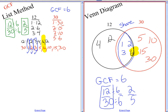12 thirtieths is equivalent to 2 fifths, but 2 fifths is in simplest form, it's reduced, it's a reduced fraction.